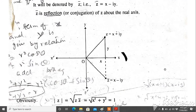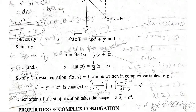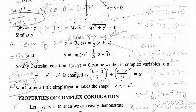The modulus of z, written |z|, has the formula √(x² + y²). It is interesting to note that if you multiply x + i·y by x − i·y, you get x² + y². From this we deduce that |z|² = z · z̄. So the modulus squared equals z times its conjugate.